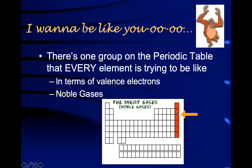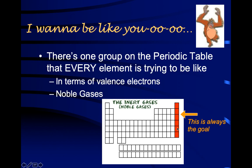The noble gases are helium, neon, argon, krypton, xenon, and radon. These have eight valence electrons, so if I'm an atom and I'm not a noble gas, I want to copy them because they are considered stable. I can't change my protons or neutrons, but what I can do is lose, gain, or change my electrons, and that would give me the valence electrons I want. Whatever I need to do to get to this noble gas column — that's what I'm trying to do.